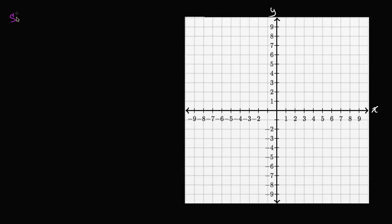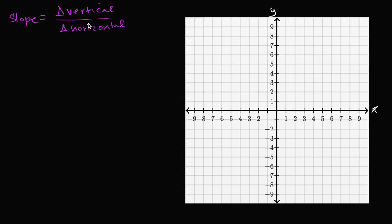Slope is defined as your change in the vertical direction — and I could use the Greek letter delta, this little triangle here is the Greek letter delta, it means change in — change in the vertical direction, divided by change in the horizontal direction. That is the standard definition of slope, and it's a reasonable way for measuring how steep something is.